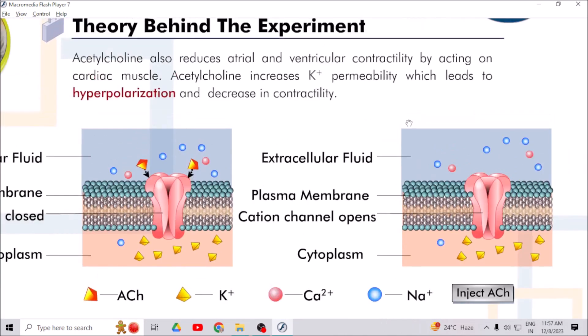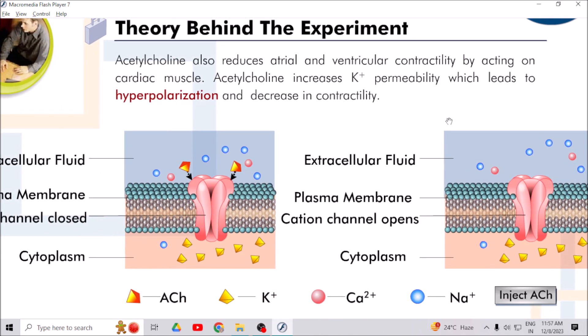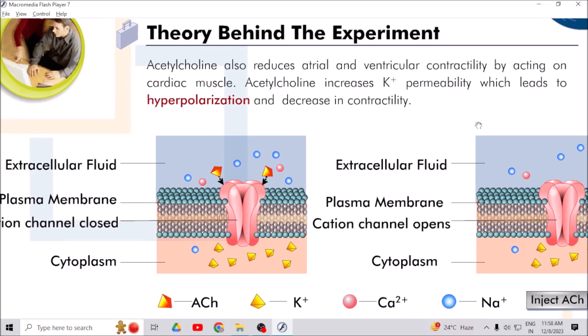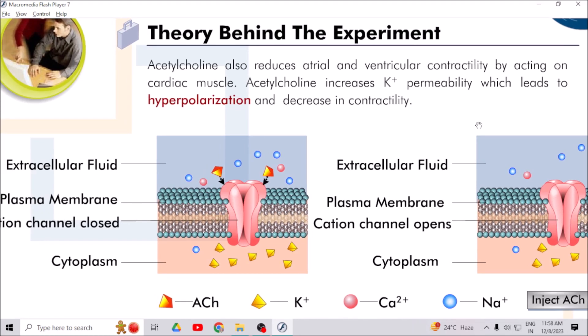Acetylcholine also reduces atrial and ventricular contractility by acting on cardiac muscle. Acetylcholine increases potassium permeability which leads to hyperpolarization and decrease in contractility.